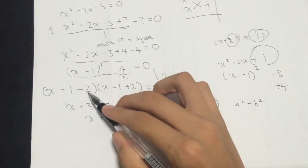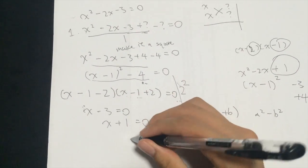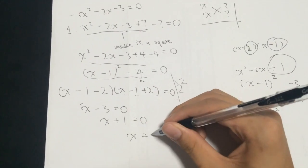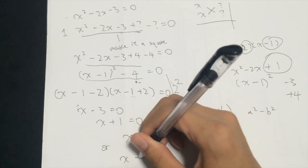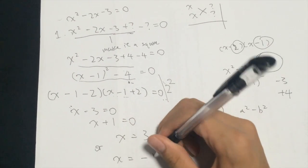As long as any of these brackets are 0, the final result would be 0. So x would be equal to 3 or x equals to negative 1.